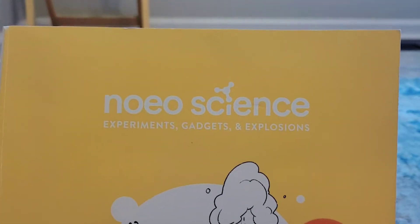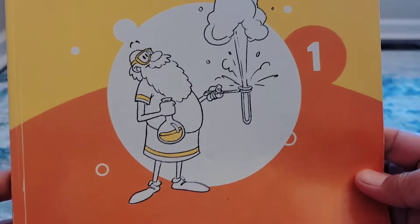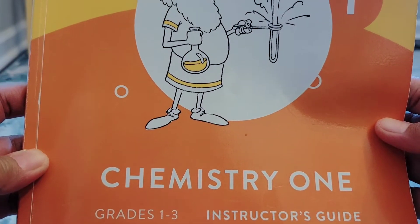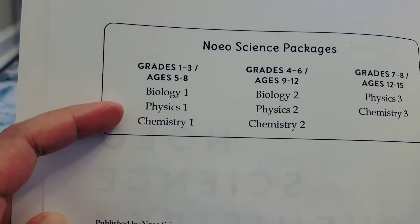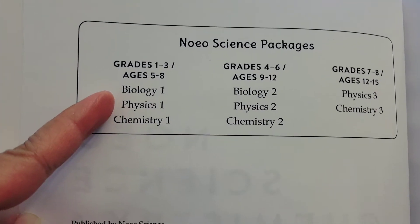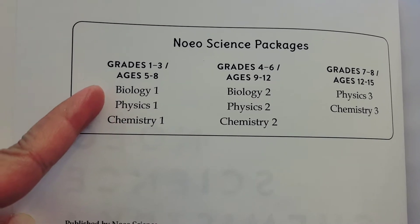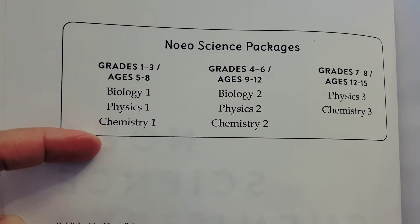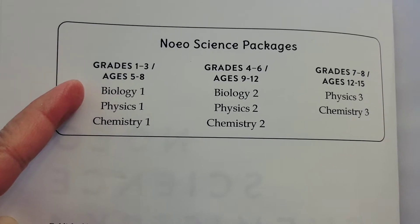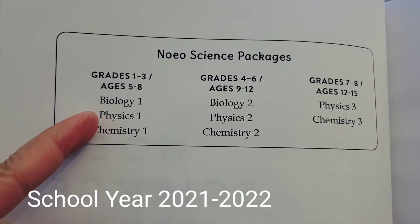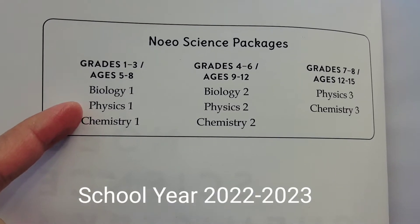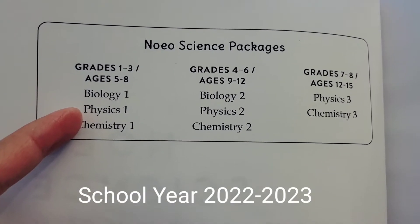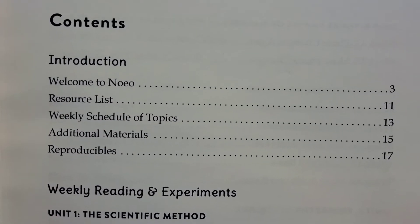Chemistry 1 is divided into 36 weeks and 11 units. We finished Week 29, Unit 9, which is about plastics, and we still have two more units left. This is the instructor's guide for Chemistry 1, Grades 1 to 3, Ages 5 to 8. They have Biology 1, Physics 1, and Chemistry 1. Last year we did Biology, this year we're doing Chemistry 1, and next school year we're going to do Physics 1.